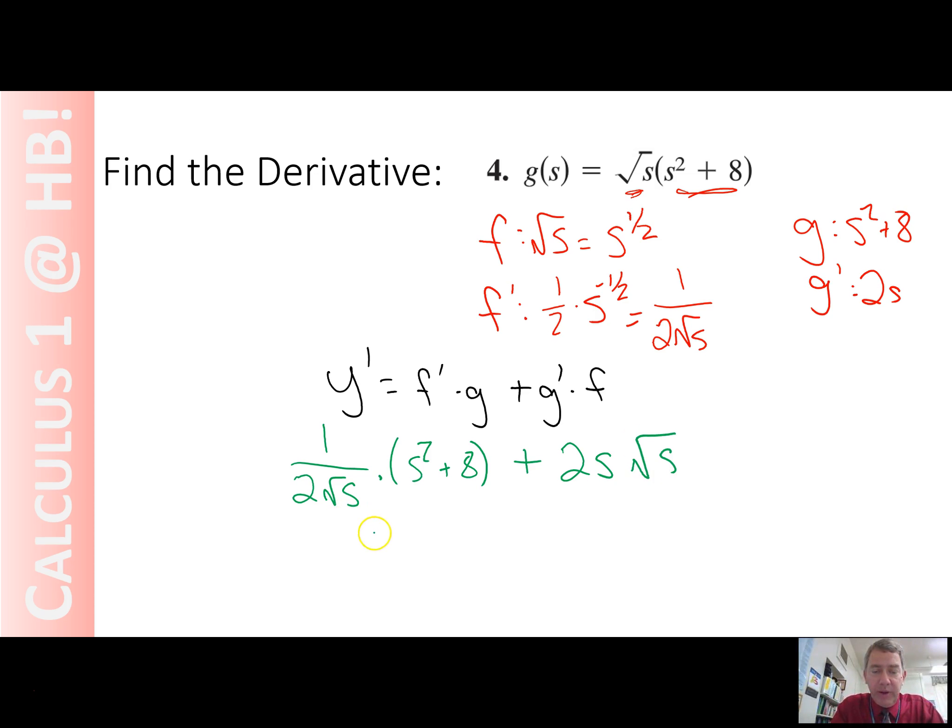We could simplify a little bit. We could call this s squared plus 8 over 2 square root of s plus 2s square root of s. But you're fine either way. Life is good!